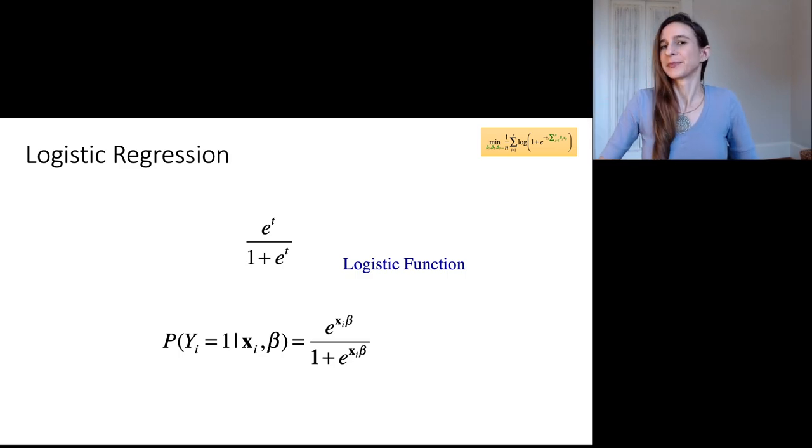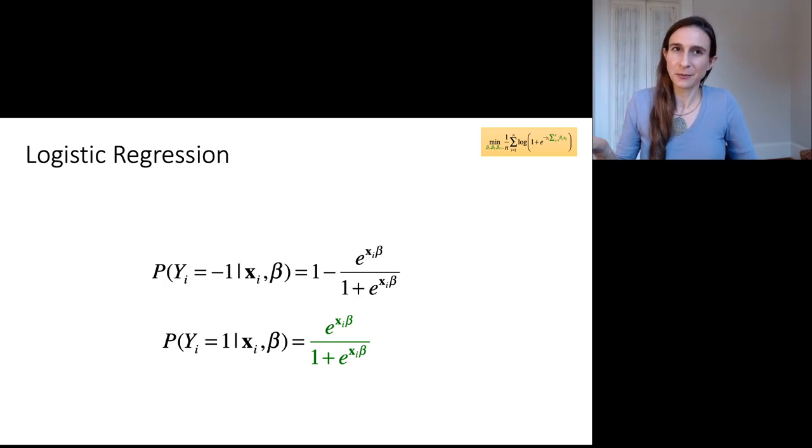Okay, so the probability that y equals one is that quantity there. That means the probability that y equals minus one is just one minus that, because y can only be either plus one or minus one, because we're doing binary classification. So you either have one or minus one, and probabilities just have to add up to one. So there you go.